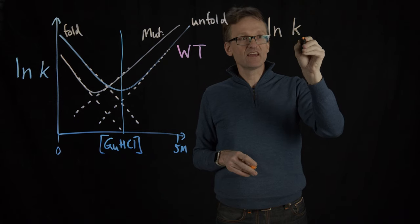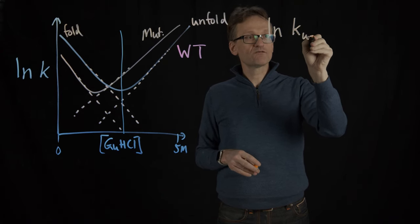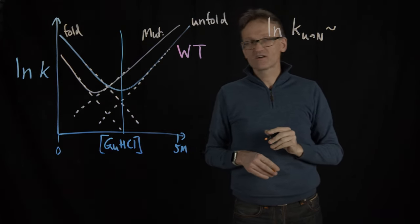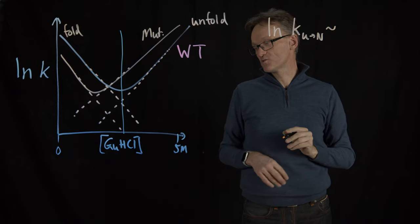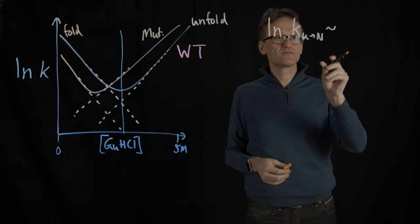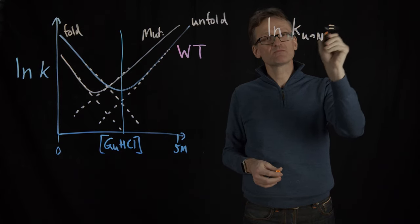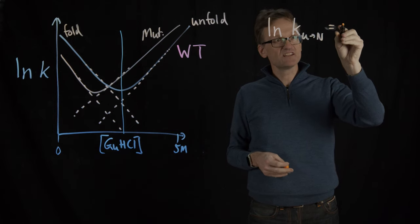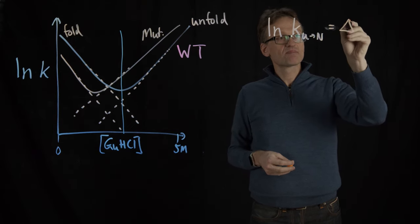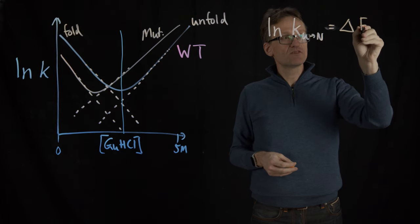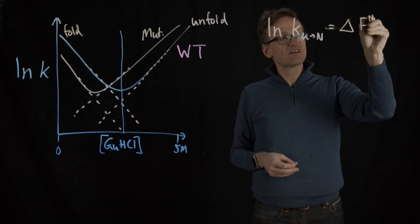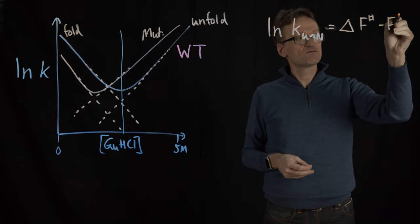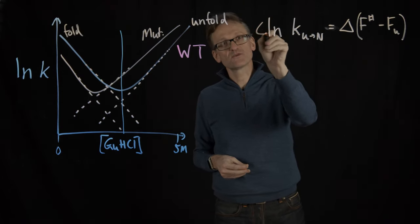So it leaves room for a delta there in a second. Delta ln K unfolded to native, that is going to be proportional to, well there's going to be an extra factor here. Strictly it's not equal but the difference is going to be equal. That is going to correspond to a change in free energy of the transition state minus the unfolded state. Technically it's not the difference but I want to put the difference there too.